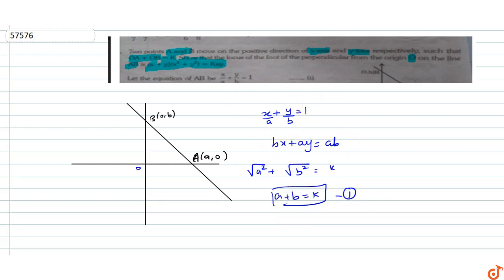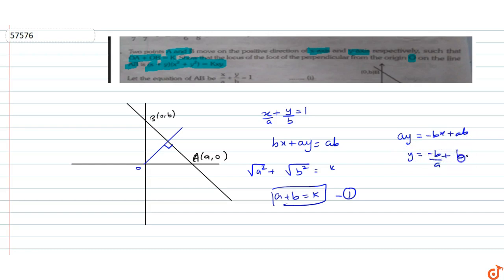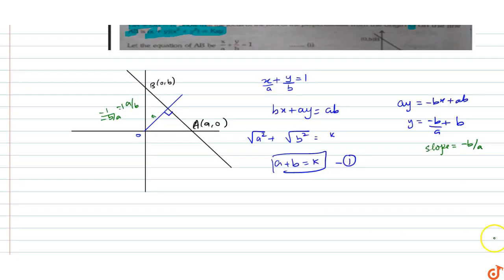Now, from the origin, the foot of perpendicular means there is a line perpendicular to AB. Looking at the slope of line AB: from bx plus ay equals ab, we get y equals minus b/a times x plus b, so the slope of AB is minus b/a. Therefore the slope of the perpendicular line is a/b.